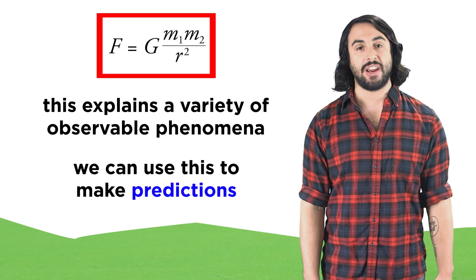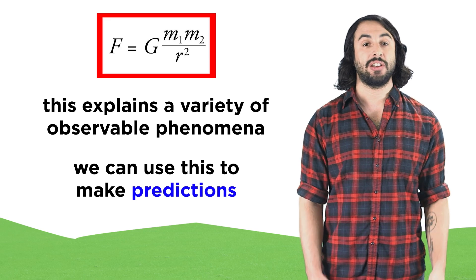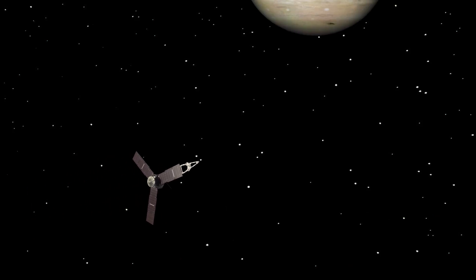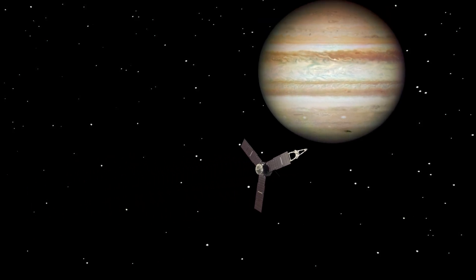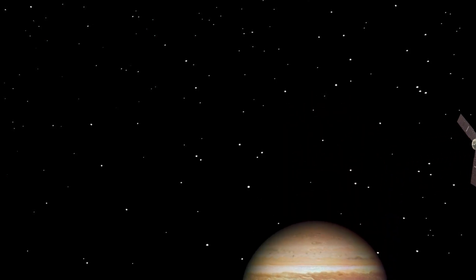We can even use this equation to do predictive calculations, which is how we send objects through space. We could send a probe towards the outer solar system, using math to predict that at a certain time, the probe and a particular planet will be near each other so that it can take pictures of the planet. And when that time comes, there it is, just as the math said it would be.